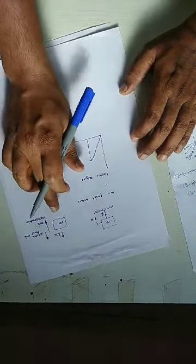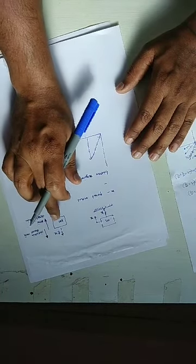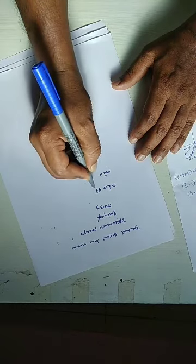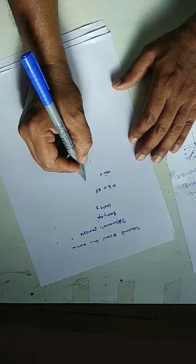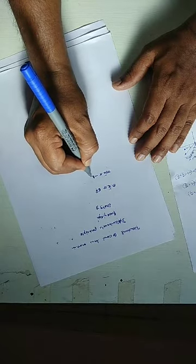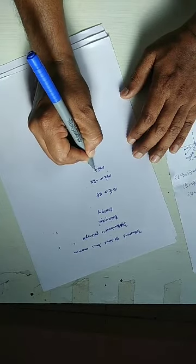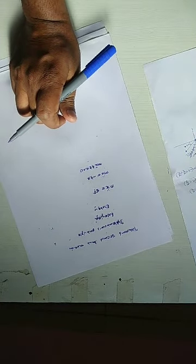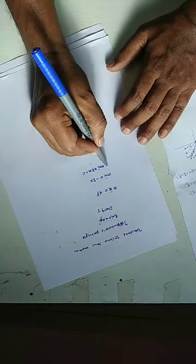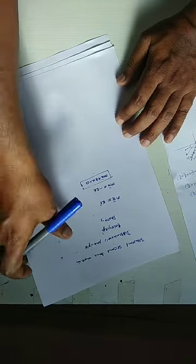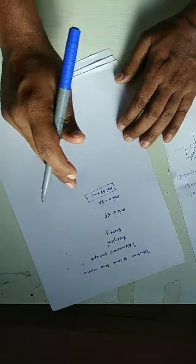Writing down the equation: m·ẍ equals the spring force in the upward direction, so it is negative kx. Therefore, the equation of motion is m·ẍ + kx = 0. With Newton's second law of motion, we write the equation of motion as m·ẍ + kx = 0.